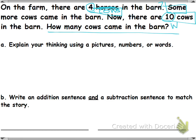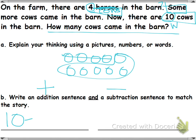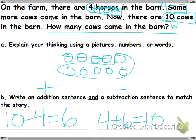They tell us the whole, so we're going to draw the whole. What is the part? They tell us 4. So we are going to cross out 4, circle the rest. Now we have to do an addition sentence and a subtraction sentence — one of each. Subtraction first: 10 minus 4 equals 6. Now addition — remember, it's your two parts: 4 plus 6 equals 10. I could have also done 10 minus 6 equals 4, and 6 plus 4 equals 10. It doesn't matter which way.